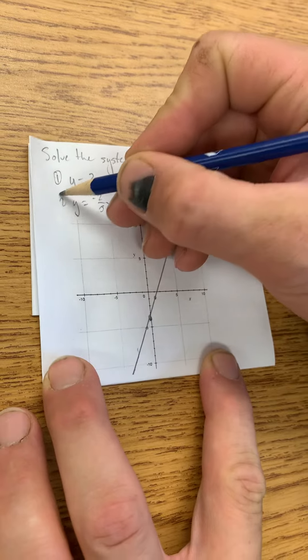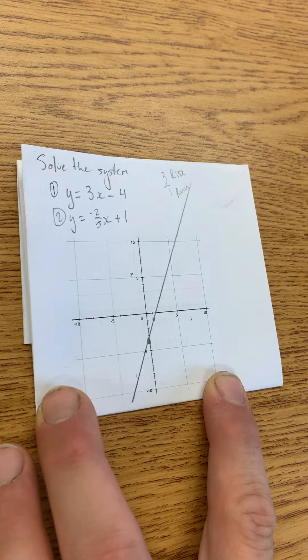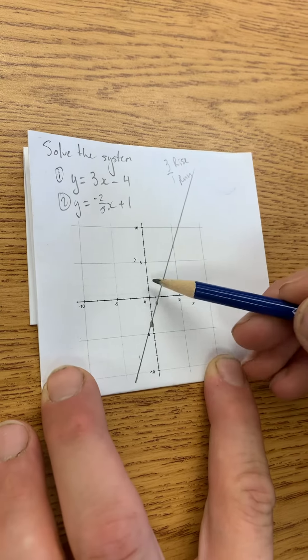Now we'll go ahead and graph line 2. So line 2 is y equals negative 2 over 5x plus 1. Again, we'll start at our y-intercept of 1.